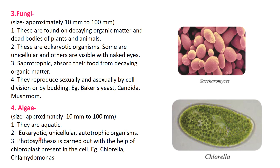Algae are eukaryotic, unicellular, and autotrophic organisms. Why are algae autotrophic? Their color is green, meaning they contain chlorophyll pigment, and because of this chlorophyll pigment they are able to prepare their own food by the process of photosynthesis. Photosynthesis is carried out with the help of chloroplast present in the cell. Examples of algae are Chlorella and Chlamydomonas. Here we can see the structure of Chlorella. Some more examples are Spirogyra.